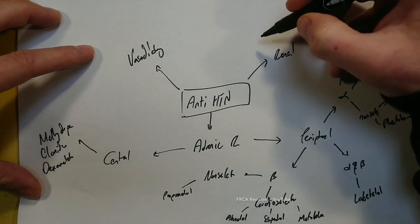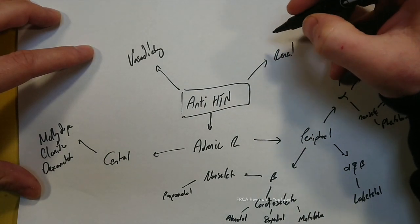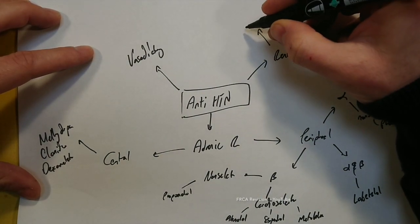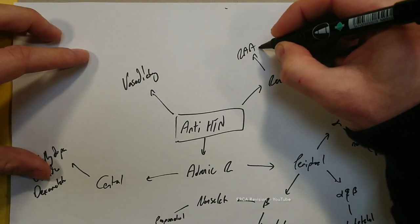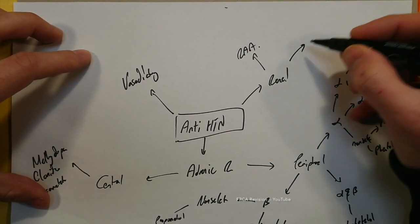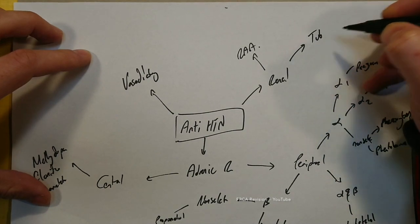So if we then move on to the renal, we have things that can affect the renin-angiotensin-aldosterone system and the things that affect the tubules of the kidney.